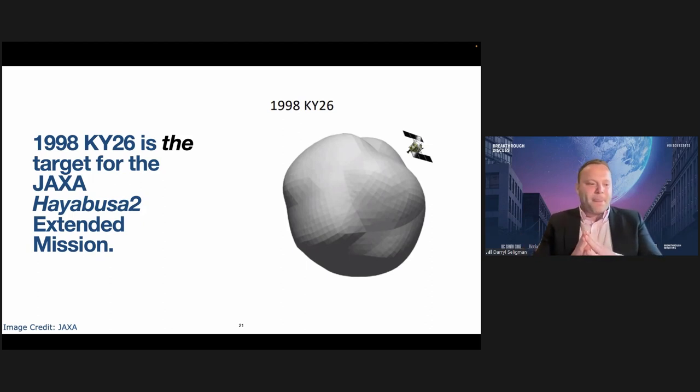But excitingly, 1998 KY26, you can probably see now why this is my favorite one of the objects, it is already the target for the JAXA Hayabusa 2 extended mission. By 2031, we will have in-situ measurements, much like OSIRIS-REx had on Bennu. We will have in-situ measurements that are capable of imaging the surface, but also measuring dust and outgassing. So we will know exactly what is causing this, and this may shed light on the first interstellar interloper, 'Oumuamua.